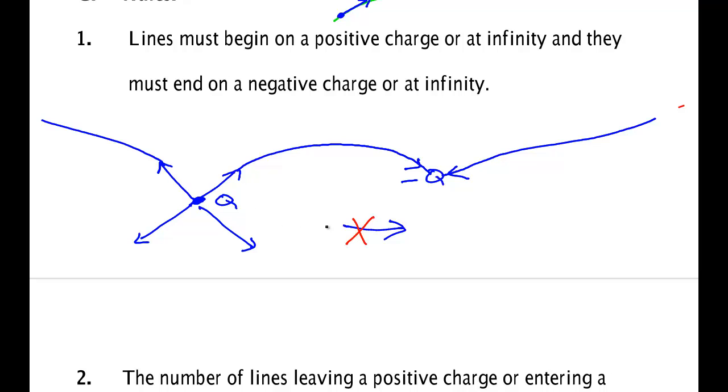So that's rule one. But all field lines have to start at a charge. And you can see I've got a slight problem here because this line did not go back and touch. So that's rule one.